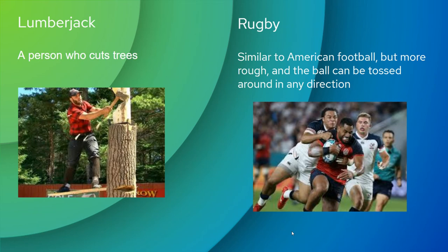Rugby — it's similar to American football, but it's more rough, and the ball can be tossed around in any direction. Here's a picture of rugby players chasing each other. The rugby ball looks similar to an American football, and you can toss it back, sideways, or forward. The goal is you have to get it across the lines, just like in American football.